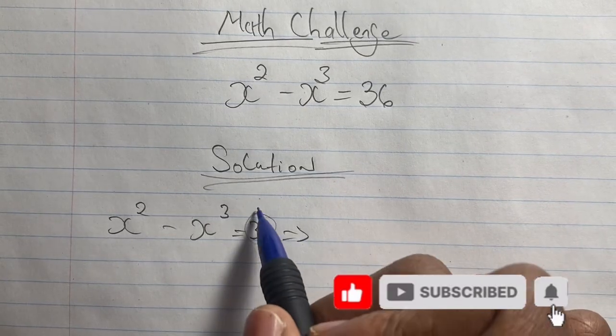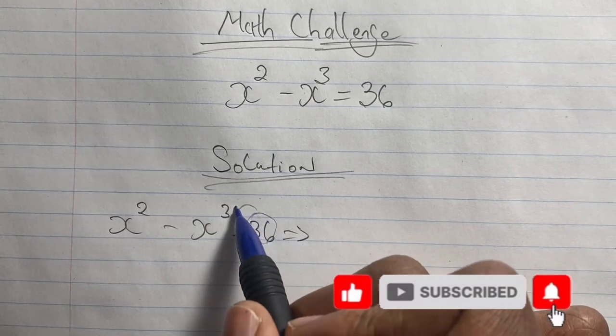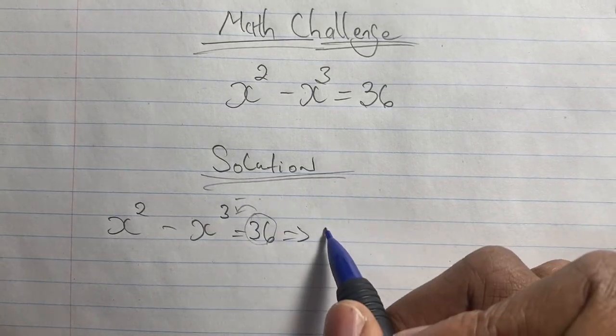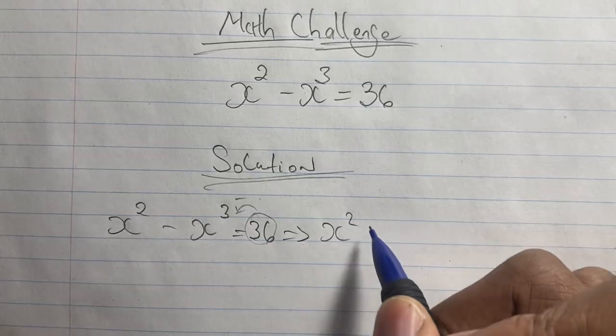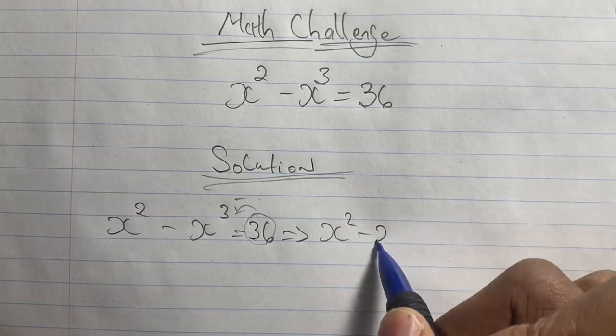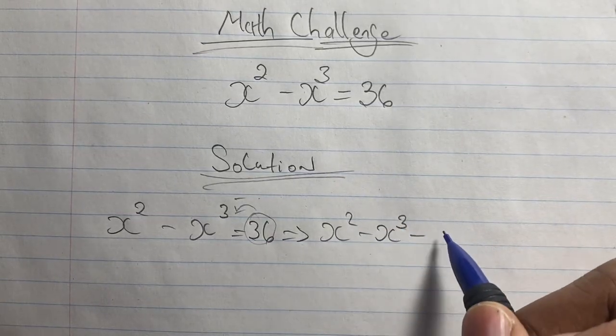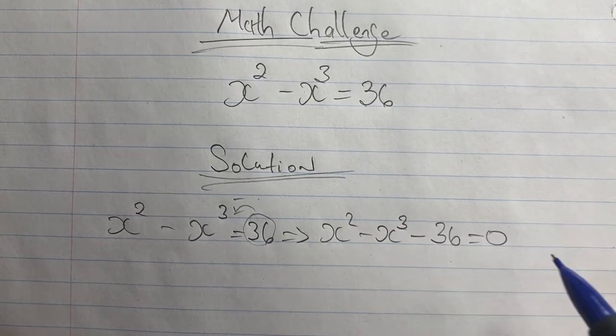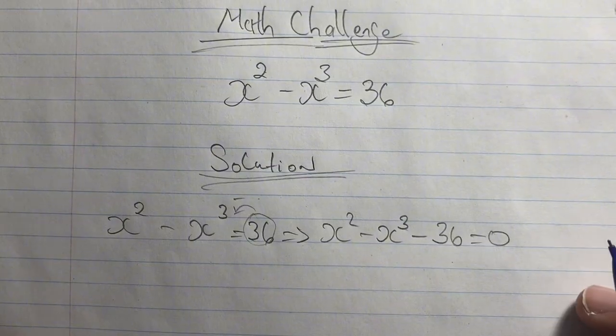Now we start to solve this equation by taking 36 and bringing it over to the left-hand side, where it becomes a negative. So now we have x squared minus x cubed minus 36 equals 0.